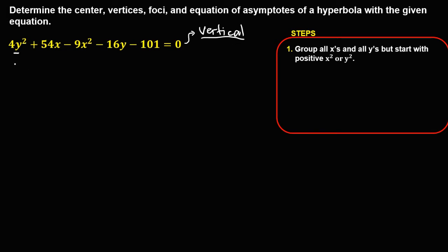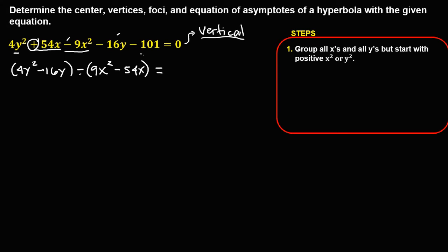We need to group first all y, so we have 4y squared, then negative 16y. For x, since this one is negative 9x squared, we need to put this negative outside, so this becomes positive 9x squared. Then this positive 54x, since we put this negative outside, becomes negative 54x. Then transpose this negative 101 to the right, so it becomes positive 101.